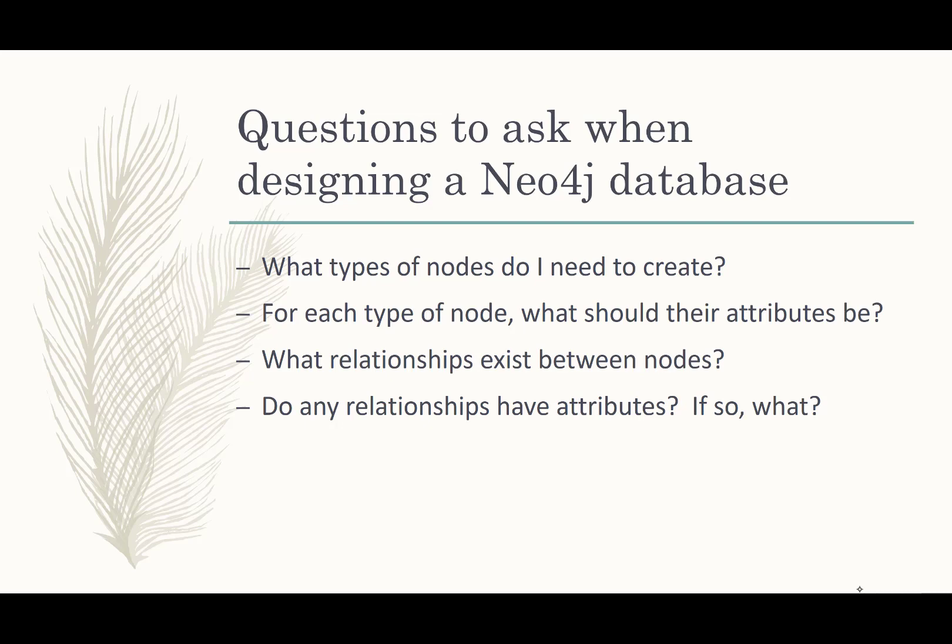And then for every type of node what should their attributes be? What are some of the properties that are important information about these nodes? Then you want to ask yourself what relationships can exist between these nodes? And if any of those relationships have attributes and if so what are they?